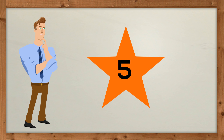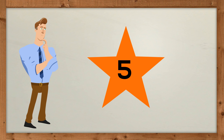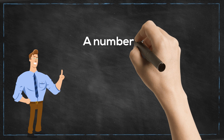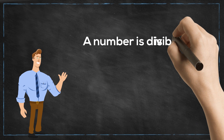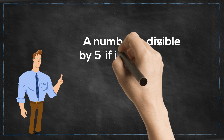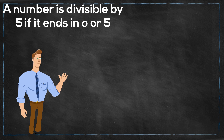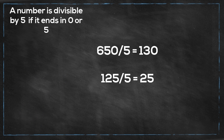Let's look at number 5. 5 is fairly straightforward — any number is divisible by 5 if it ends in 0 or 5. Here are two examples: 650 and 125. Notice they end in 0 and 5.